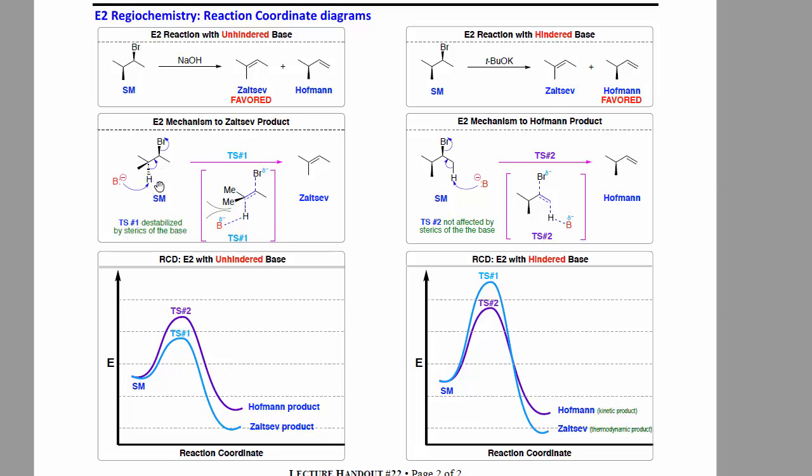The smaller the base, the lower the energy of that particular transition state. The larger the base, the higher the energy of this transition state. Said another way, this blue line is going to be dramatically affected by the size of the base. And in a relatively small base, that blue line is going to be low. And this is the line that leads to the Zaitsev product, which is the thermodynamic one.